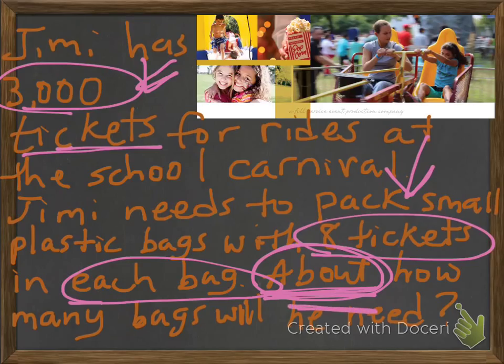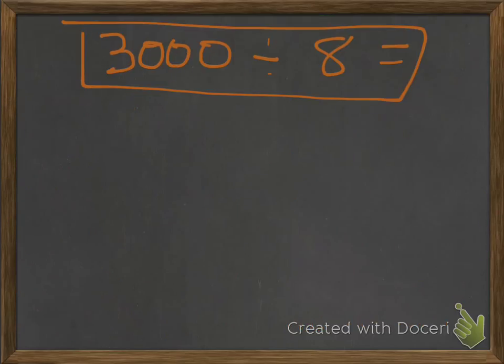They want us to know about. So what could we do to help us find a way to solve this without actually solving the whole problem itself? Well, we want to know what are some things, if we multiply by 8, will get us a number that is actually close to 30.